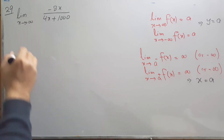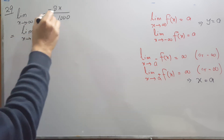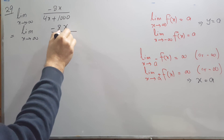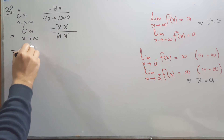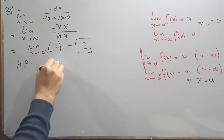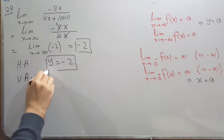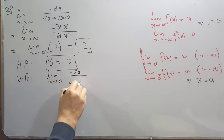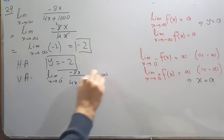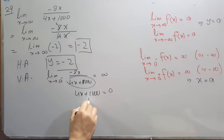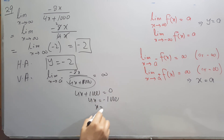In this problem, we restrict to the highest power terms: x cancels with x in numerator and denominator, leaving -2. So the limit as x approaches infinity is -2, and the horizontal asymptote is y = -2. For the vertical asymptote, we set the denominator 4x + 1000 = 0, giving 4x = -1000, and dividing by 4 gives x = -250 as the vertical asymptote.